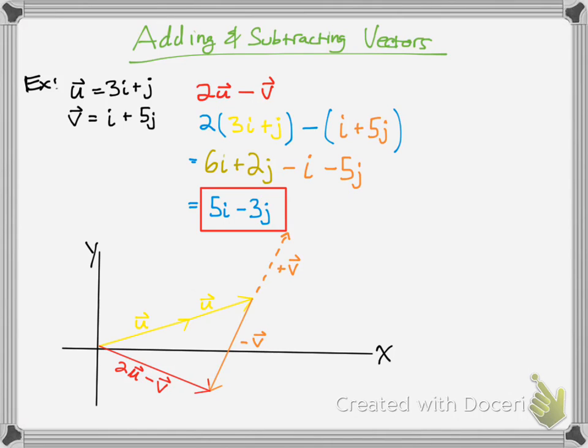Now how does that look graphically? Well, first what you do is you do the first u. And then since there are two of them, you do it again. So I drew two u's there. And instead of adding the vector v, you would subtract it. But to show you how that works, you first show where it would be if you were to add it.